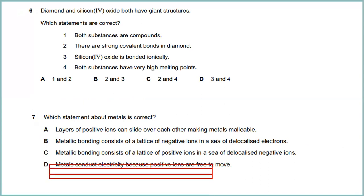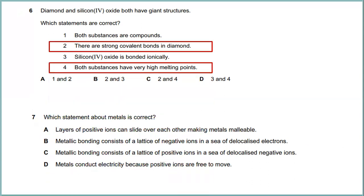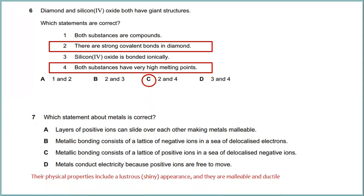Question six: diamond and silicon oxide both have giant structures. Which statements are correct? There are strong covalent bonds in diamond, and both substances have very high melting points, so the answer is 2 and 4. Question seven: which statement about metals is correct? Layers of positive ions can slide over each other, making metals malleable. The answer refers to this property.